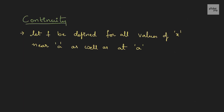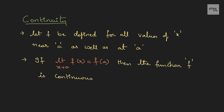Let us assume that the function f is defined for all values of x near a as well as at a. Then if the limit as x approaches a of f(x) equals f(a), we say the function is continuous. Suppose we have a graph — if this point is a, we say the function is continuous if the limit exists, meaning the left-hand side and right-hand side both exist and are equal, and the value itself should also be equal.